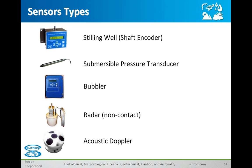In the coming slides we're going to talk about a number of different types of sensors that are used in the industry. Most of these sensors must meet the USGS standard for accuracy, which is one hundredth of a foot. That is generally the standard that most domestic organizations use for accuracy.